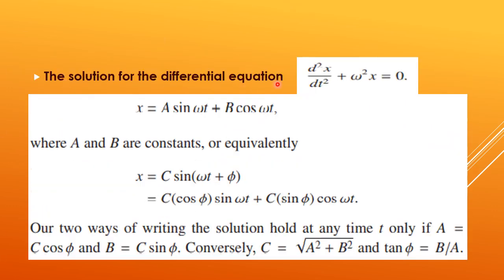The solution of this differential equation is x = A sin(ωt) + B cos(ωt), where A and B are constants. Alternatively, it can be written as x = C sin(ωt + φ), where C = √(A² + B²) and tan(φ) = B/A.